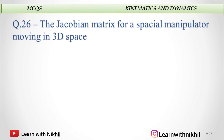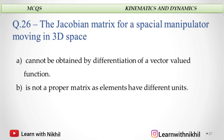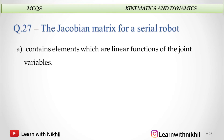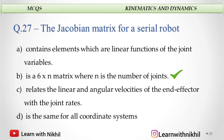The Jacobian matrix for a spatial manipulator moving in 3D space cannot be obtained by differentiation of a vector-valued function. A Jacobian matrix for a serial robot is a 6 by N matrix, where N is the number of joints.